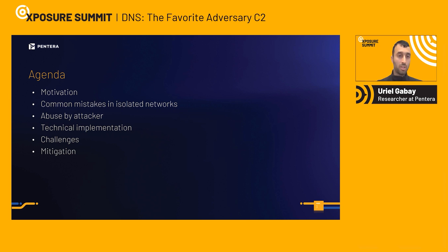Today's agenda is to understand the motivation from an attacker's point of view to use C2 communication based on DNS — why not use HTTP, for example. We'll see different basic architectures that include DNS misconfigurations for isolated networks, how an attacker can abuse them, and the technical details of implementing DNS for C2 communications, including challenges and how to overcome them. Finally, we'll cover how to mitigate this kind of communication.